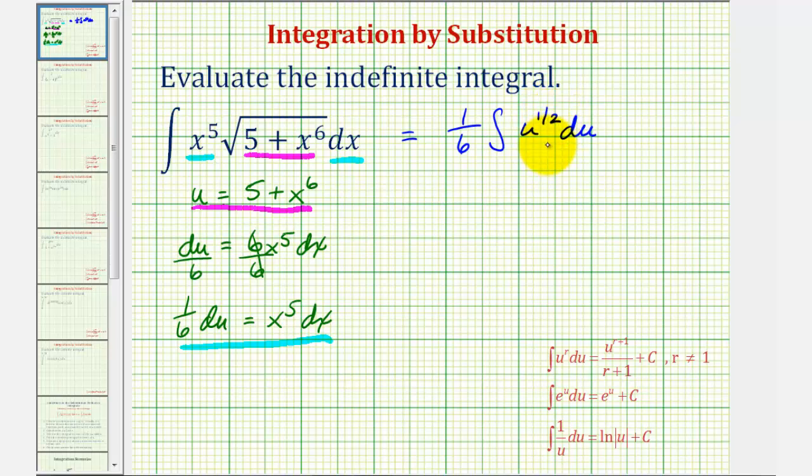Now we'll integrate in terms of u, and then write the result in terms of x. So we'll have one-sixth times, here we're going to add one to one-half, it's going to be u to the three-halves, divided by three-halves, which is the same as multiplying by the reciprocal of two-thirds, and then plus c.